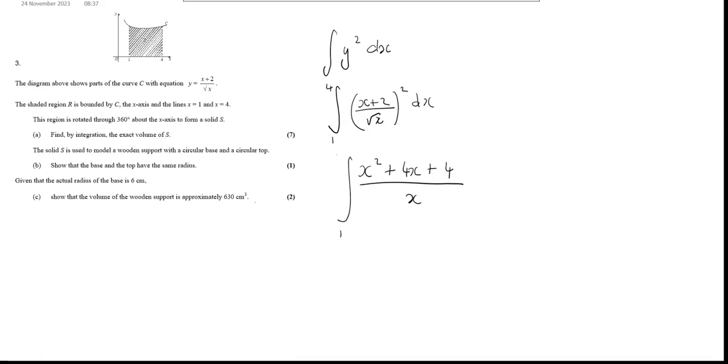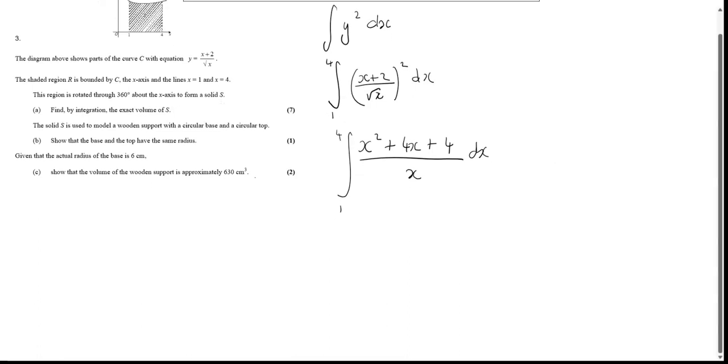And we need to integrate this between 1 and 4 with respect to x. And if I simplify each term down, I'm going to get x plus 4 plus 4 over x with respect to x. And now if I integrate this,